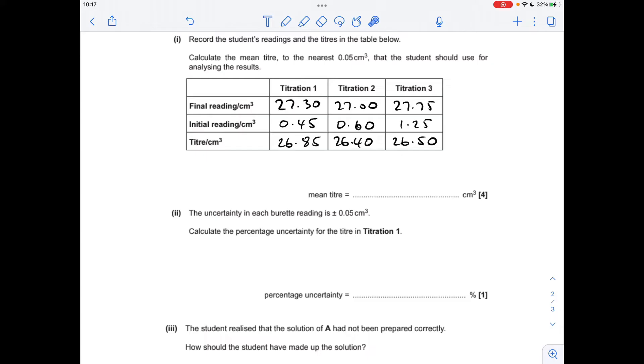So there's all the results in the table now. So we've got to work out the mean titra. So we're looking for concordant results, results within 0.1 of each other. You can see titration 1's too far out. They are concordant. So we'll take the mean of those, which gives 26.45 centimeters cubed.